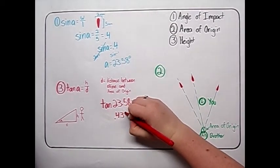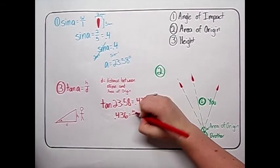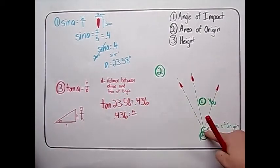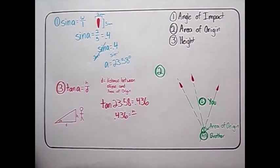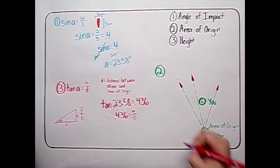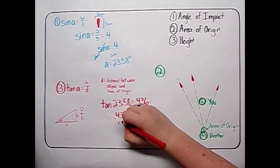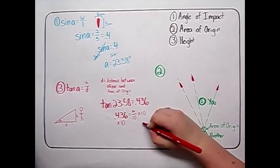0.436 equals H over D. We know that D is the distance between the ellipse and your area of origin. You measure and find that the distance is 10 feet. H over 10 equals 0.436. Now multiply each side by 10 in order to isolate the variable H.